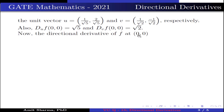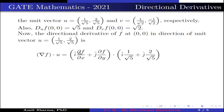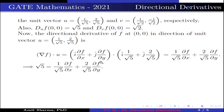The directional derivative of f at (0,0) in the direction of unit vector u = (1/√5, 2/√5) is ∇f · u, which is written as (i · ∂f/∂x + j · ∂f/∂y) · (i · 1/√5 + j · 2/√5). The dot product gives 1/√5 · ∂f/∂x + 2/√5 · ∂f/∂y.